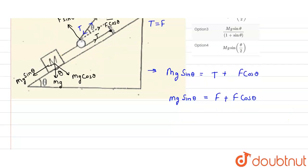So now students, if we take here F common, so it will be mg sin theta upon (1 + cos theta).